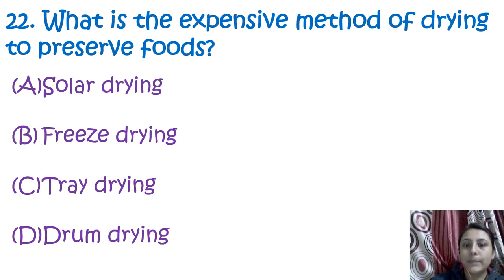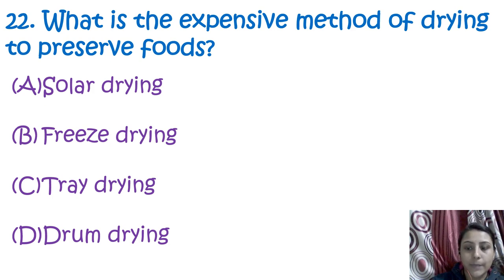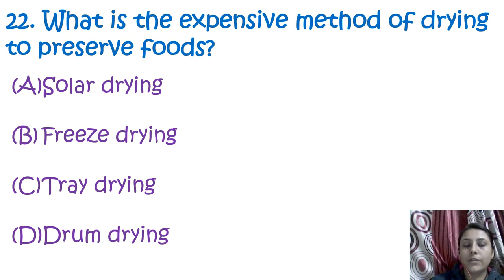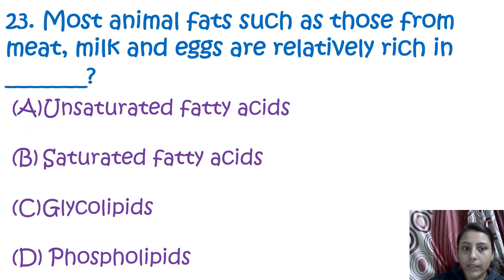The next question is: what is the most expensive method of drying to preserve food? Solar drying, tray drying, and drum drying are inexpensive methods. The expensive method for drying to preserve food is freeze drying.